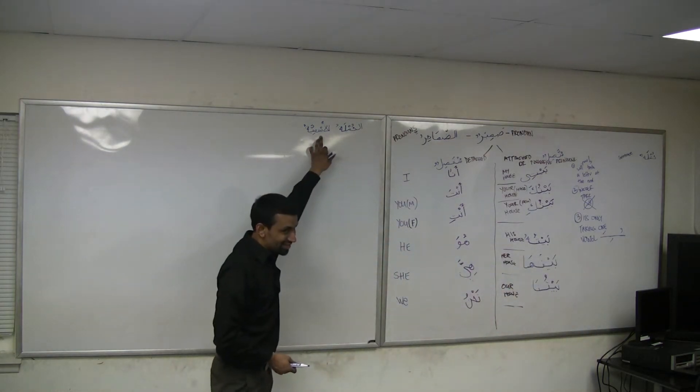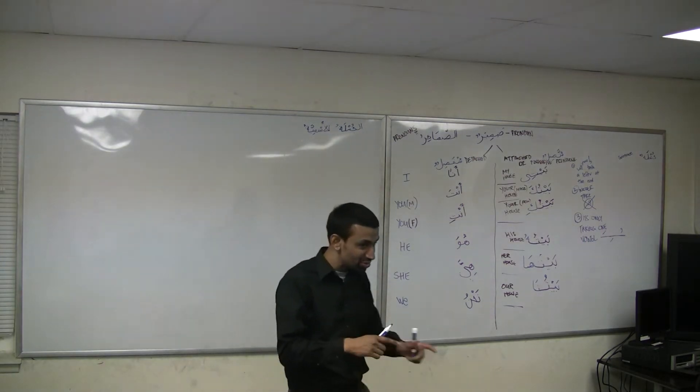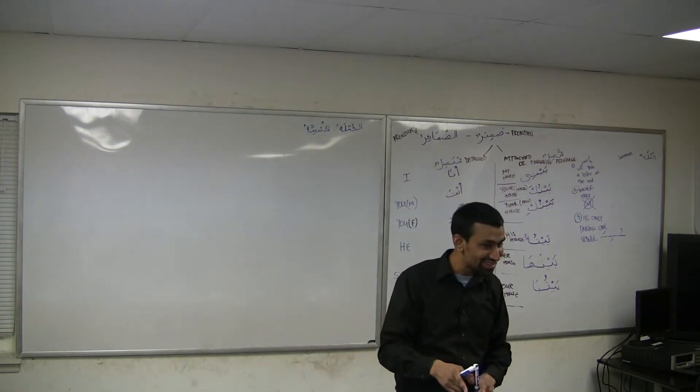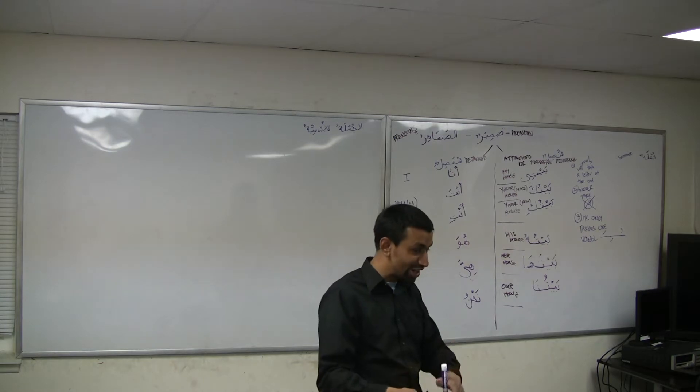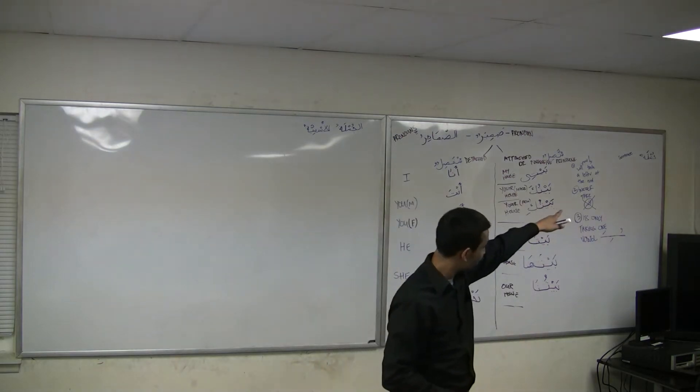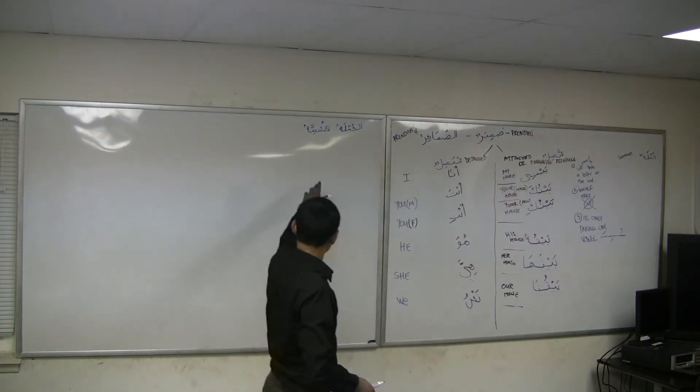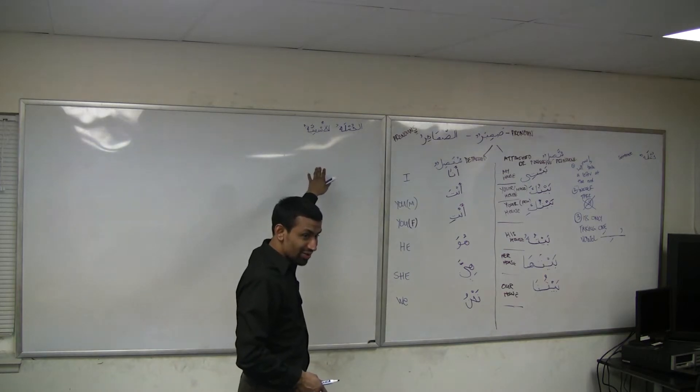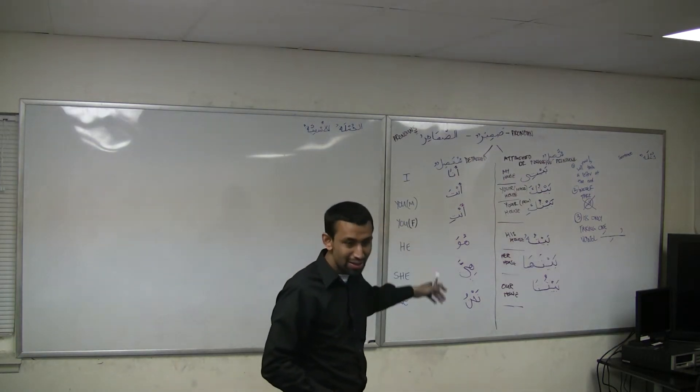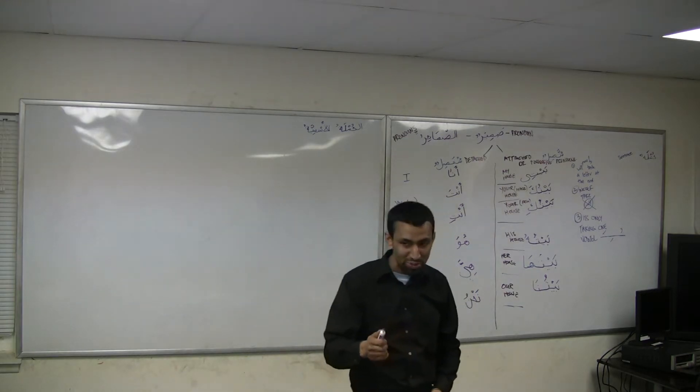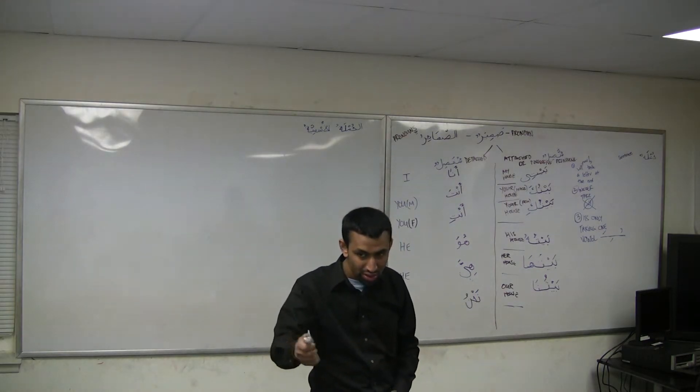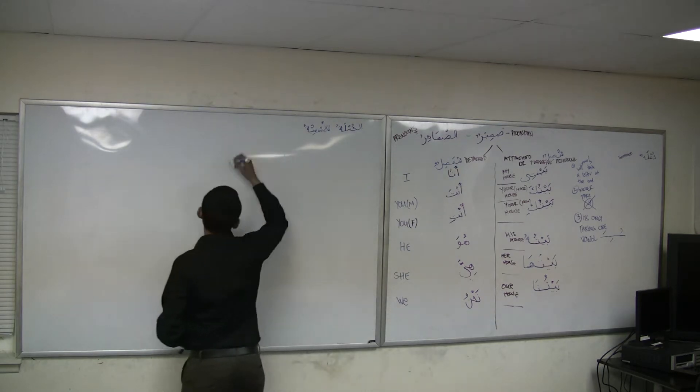Notice that the word ism is in ismiya. Jumla ismiya - the noun sentence in Arabic. That's exactly what it means in English. Jumla is sentence, ismiya is noun or nounish. So what does jumla ismiya have to start with? An ism.